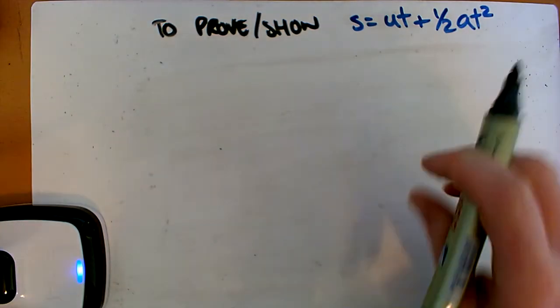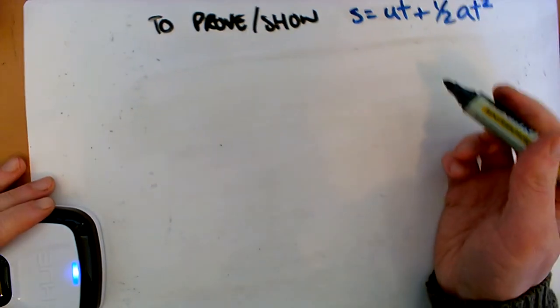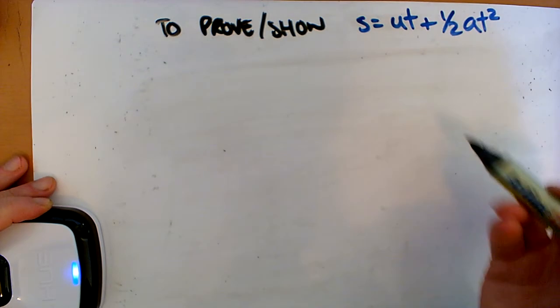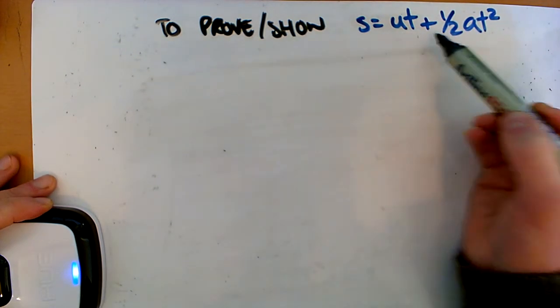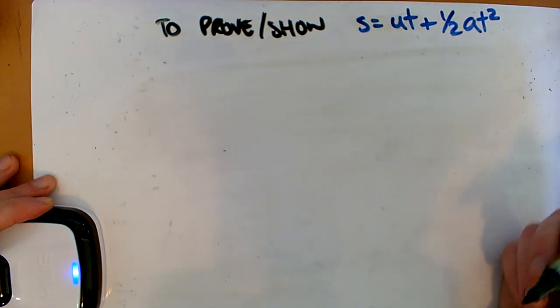Okay, so I'm going to go through the second one that we could have to prove or show from the UVAST equations. And this is this one. So S is equal to ut plus half at squared.